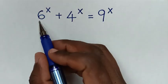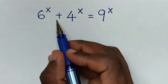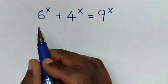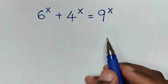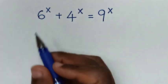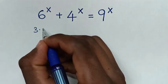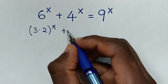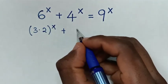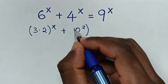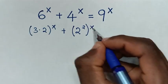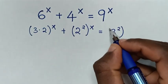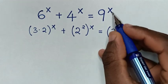Hello. How to solve 6^x + 4^x = 9^x, to find the value of x from this equation. Now, 6 is the same as 3 times 2, so we write (3×2)^x. Then 4 is the same as 2 squared, so we write (2²)^x. And 9 is the same as 3 squared, so we write (3²)^x.